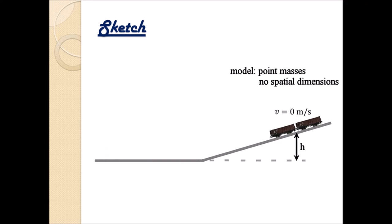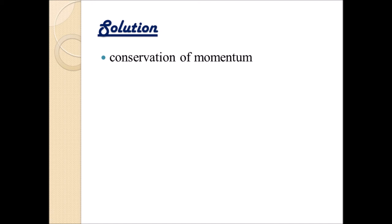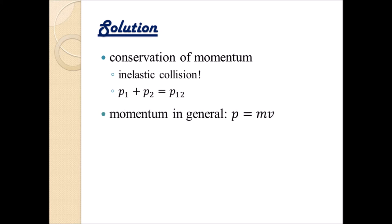How do we then solve this problem considering point masses? Of course if the two cars hit one another there is conservation of momentum. It's an inelastic collision meaning we do have a momentum of each car before they collide and a joint momentum after their collision, so p1 plus p2 equals p12. In general momentum is defined as the product of mass m and velocity v.